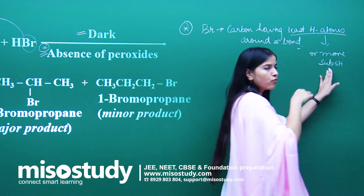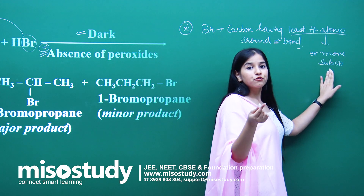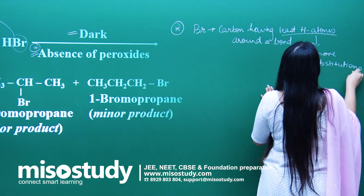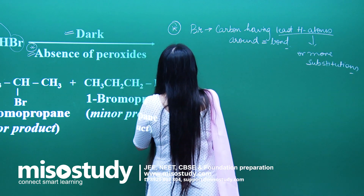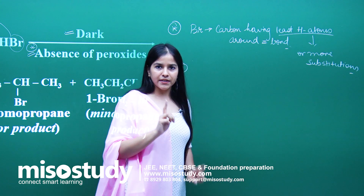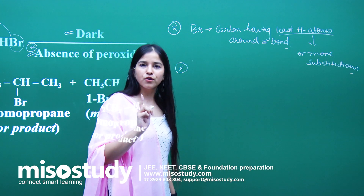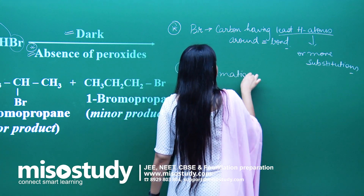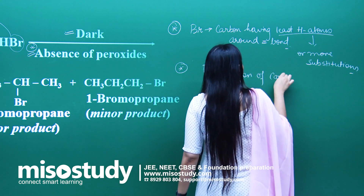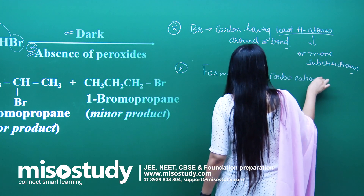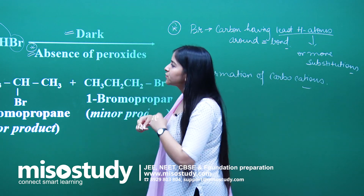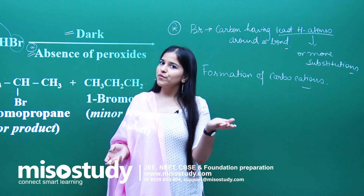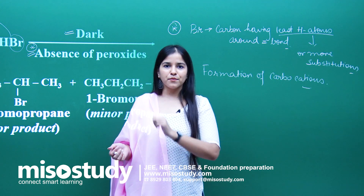More substitutions means other than hydrogen atoms, what groups are substituted. The second key point: always remember that in Markovnikov's rule, there is the formation of a carbocation. It proceeds via carbocation formation, and obviously tertiary carbocation is more stable, then secondary, then primary.